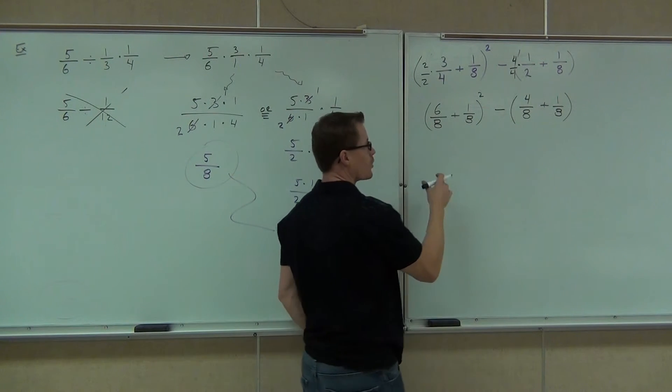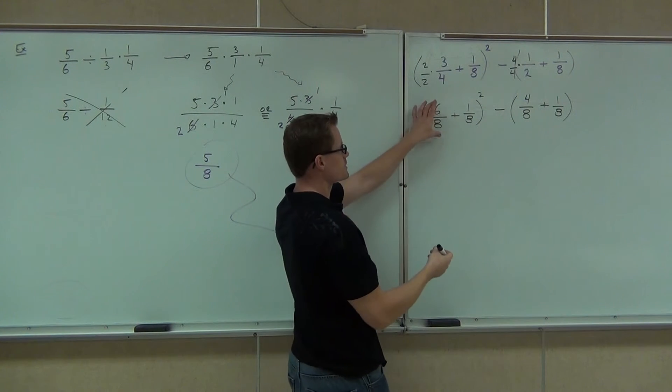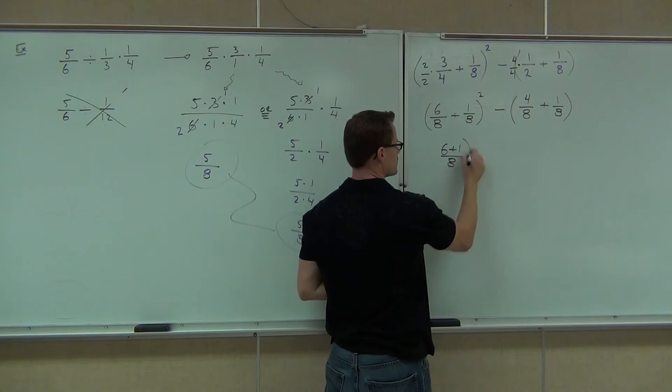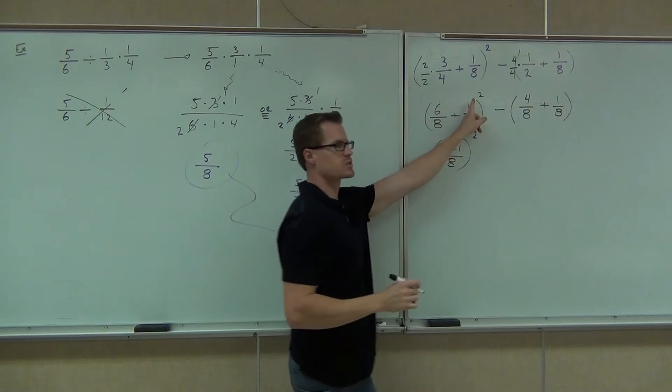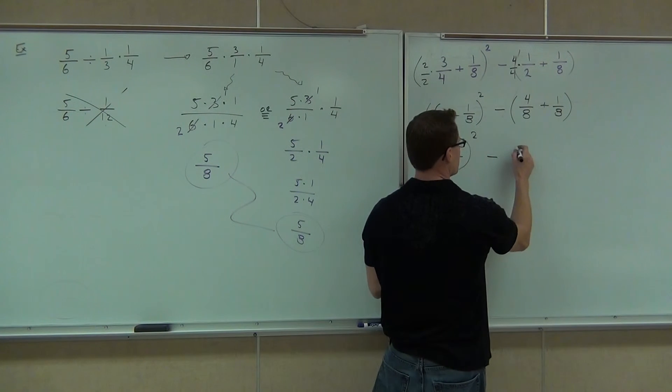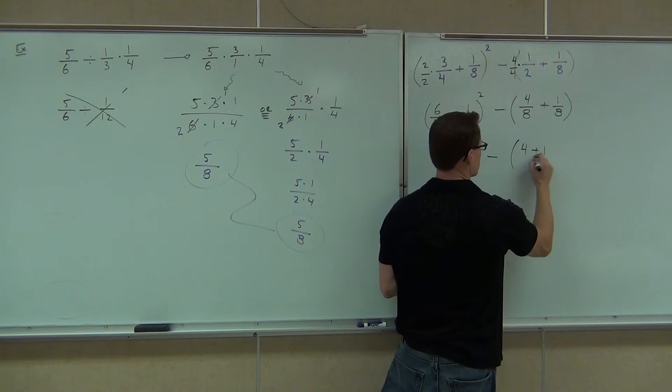Now, we'll be able to combine those fractions together. If we do our first couple, we're ultimately going to get seven-eighths. We have six-eighths plus one-eighths. We're going to do six plus one over eight. Notice how we're not dealing with the exponent yet. Not yet. We've got to get one fraction first before we do the exponent. And we're going to do four plus one over eight.